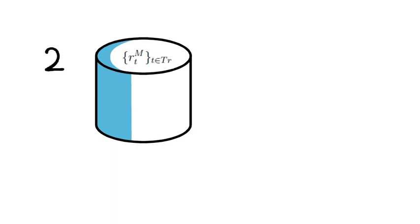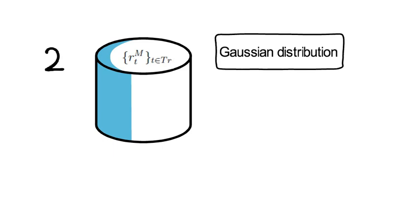Now, appreciate that the AR(0)-ARCH(1) parameterization of your model assumes that each of these returns has been drawn from a Gaussian distribution. I highlight that explicitly here by writing down the density for R_1^M up to R_U^M.